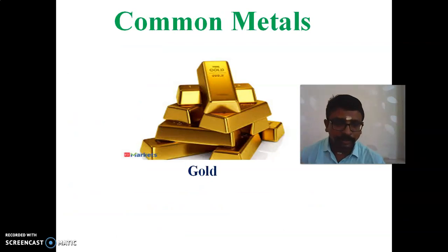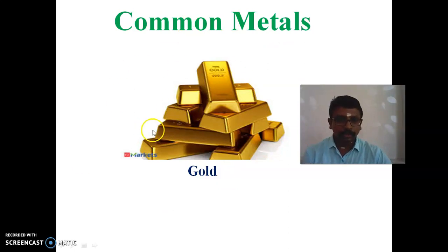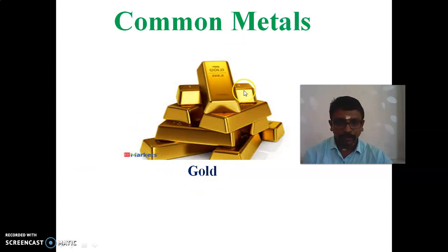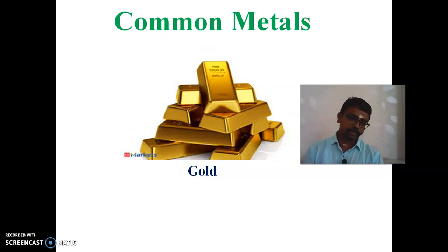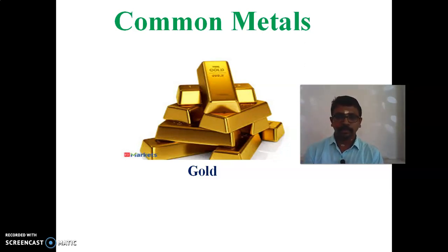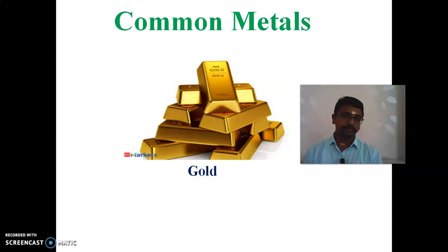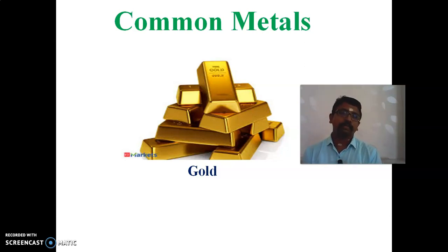Let me look at some common metals. Gold — what is the symbol for gold? AU. Gold has lustrous properties and is very hard. It can be used in various ornaments and jewels. Gold has various properties and is mainly used for the purpose of ornaments.